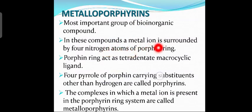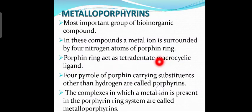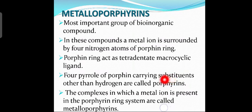The metal ion is present inside the porphyrin ring. The porphyrin ring acts as a tetradentate macrocyclic ligand, forming four bonds around the central metal ion. Four pyrrole rings of the porphyrin carry substituents other than hydrogen. The complexes in which a metal ion is present in the porphyrin ring system are called metalloporphyrins.